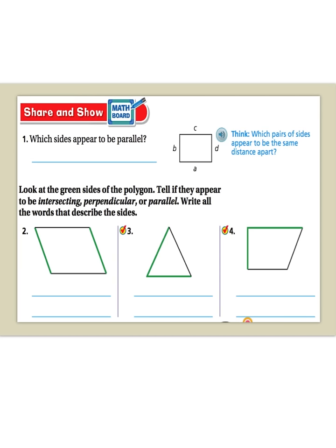For number one, let's find out what sides are parallel. Let's start off with the top and bottom. When I look at the top and bottom, let's use that little trick we learned before and continue them even further. I can definitely tell that they do not touch, so they are parallel — C and A are parallel. How about the two sides? Let's use our trick again and continue it even further. I see that these do not touch either, so B and D are also parallel.